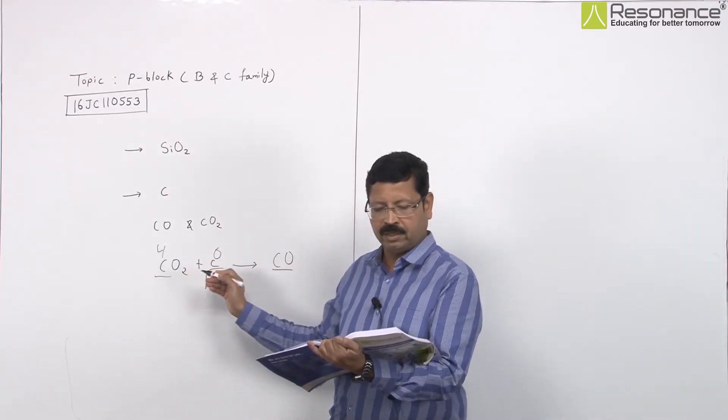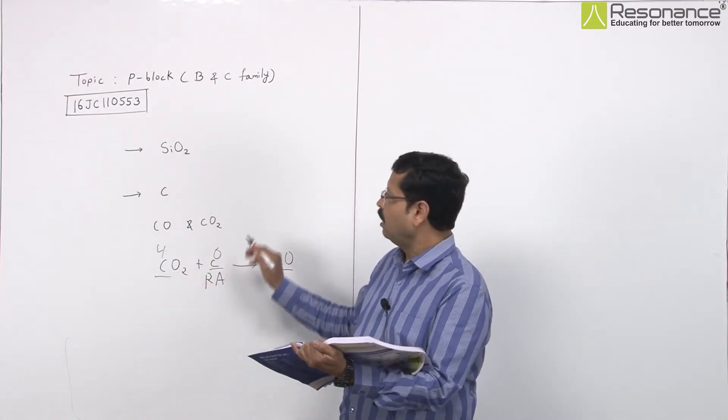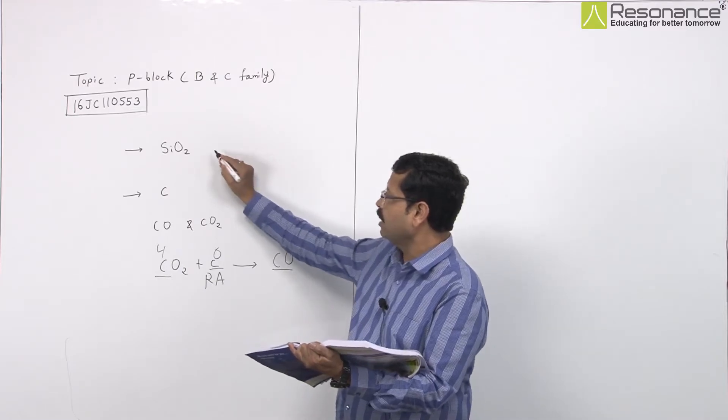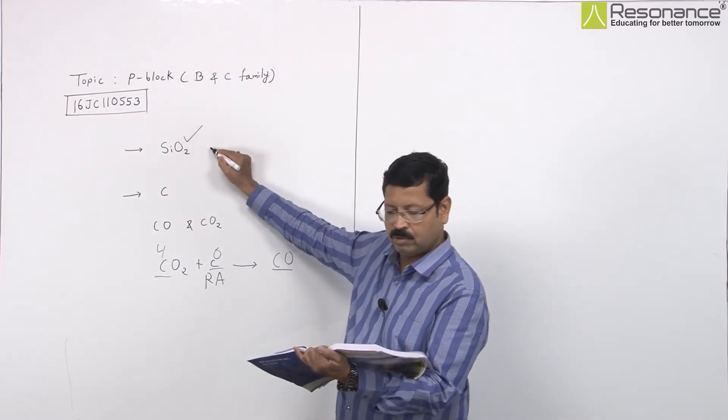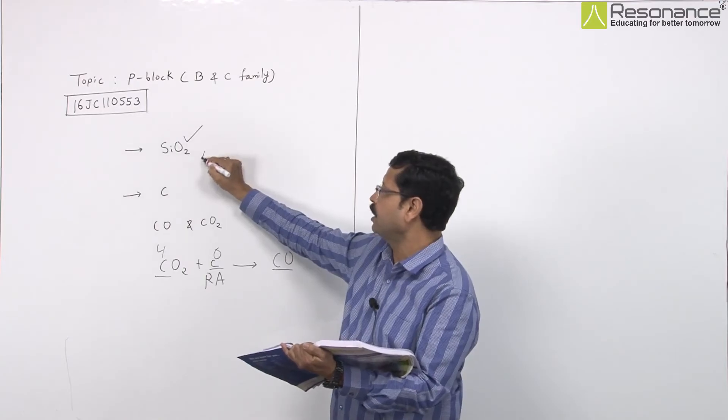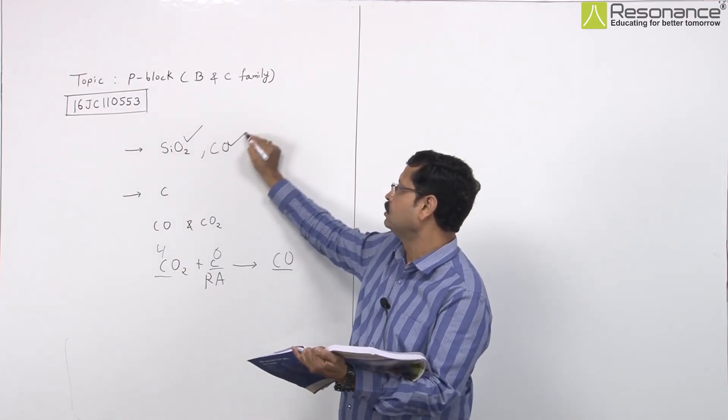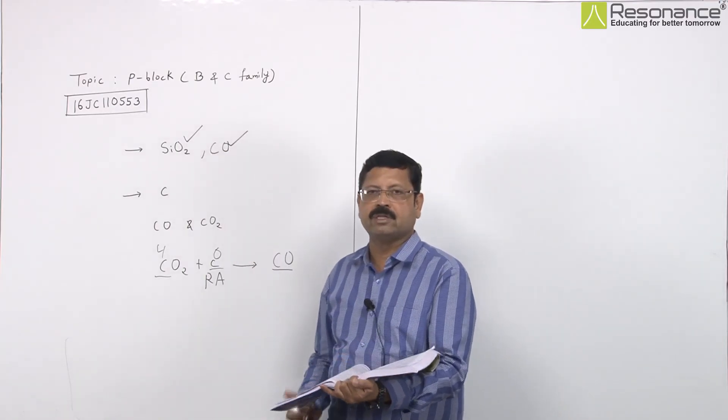So finally, our final products are SiO2 and CO. In option D, it shows CO, so option D is the correct answer.